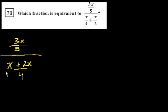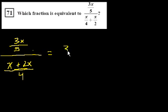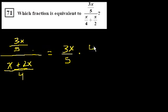If you divide by a certain fraction, that's the same thing as multiplying by its inverse. So this is going to be equal to 3x over 5 times 4 over x plus 2x.